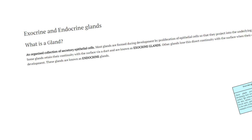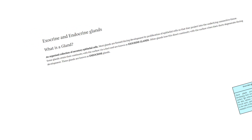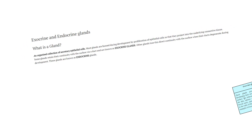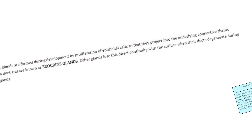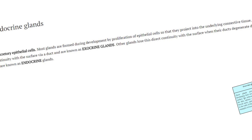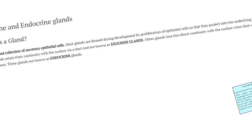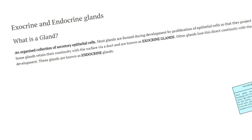Let's explain a little bit more about exocrine versus endocrine glands. It's very important to know the distinction between these two. Glands are a collection of secretory epithelial cells — they're going to secrete something. If they have a duct, where their secretion goes to a surface via a duct after the secretion is made, then you would have an exocrine gland.